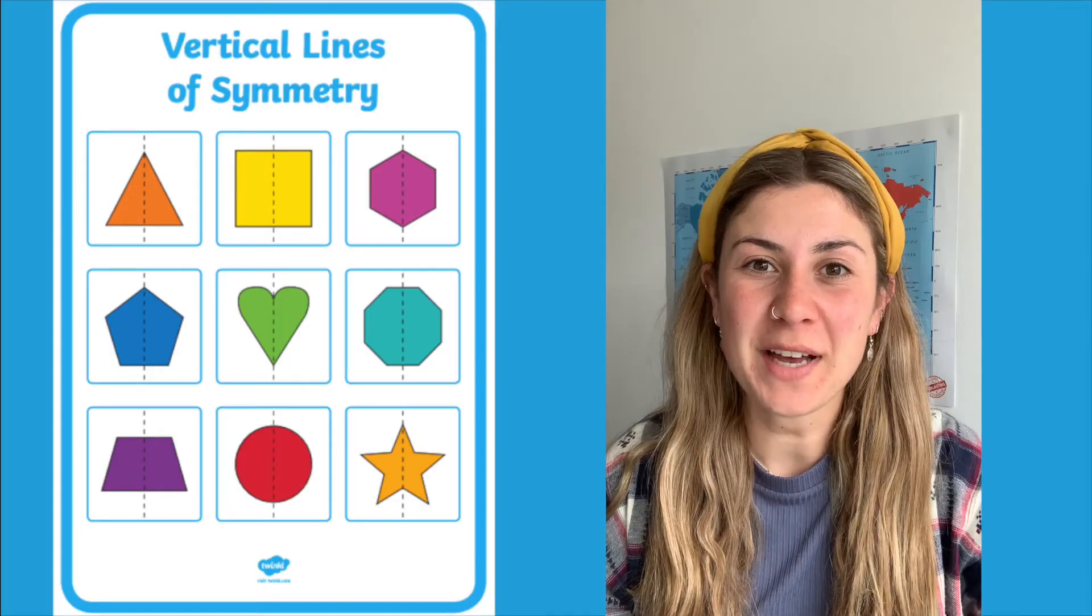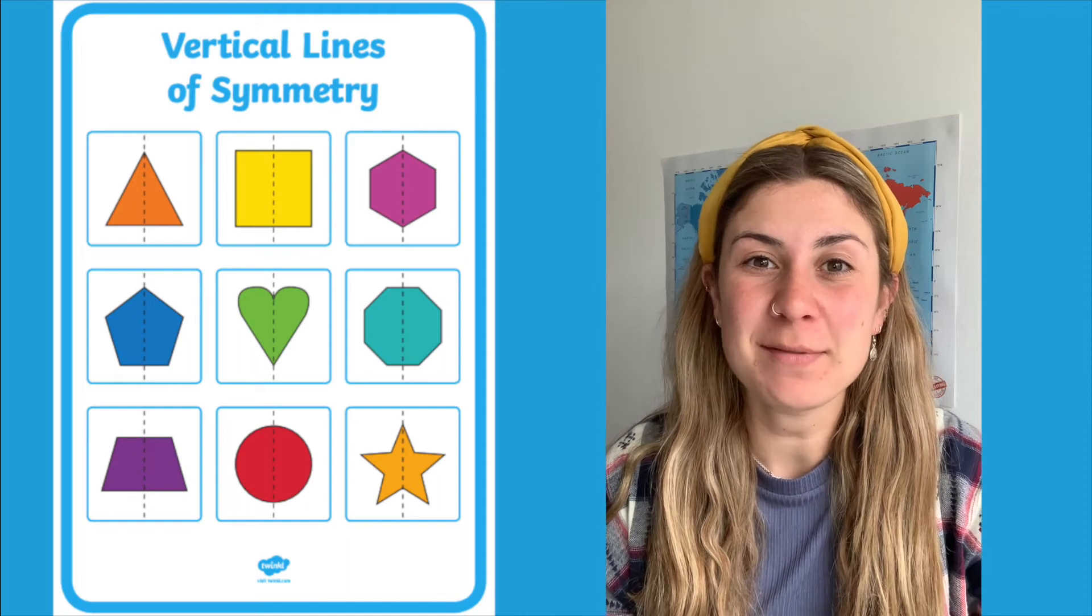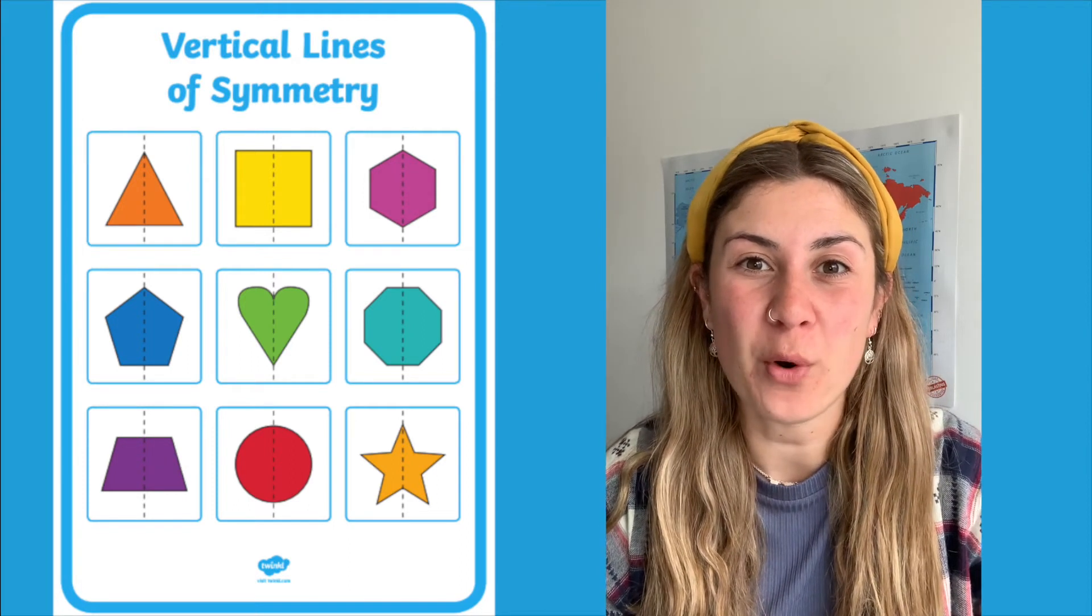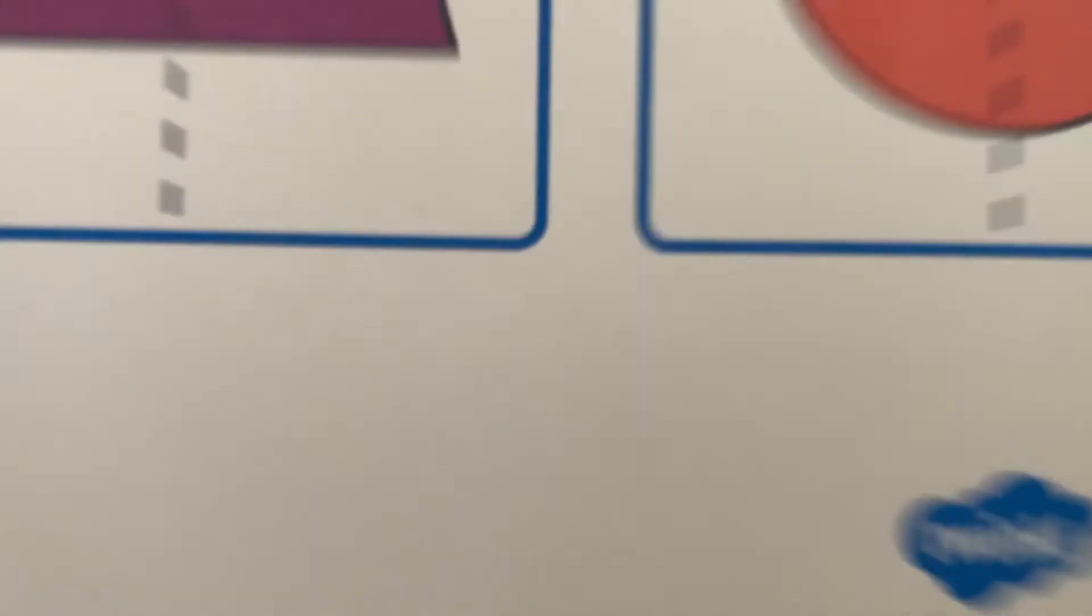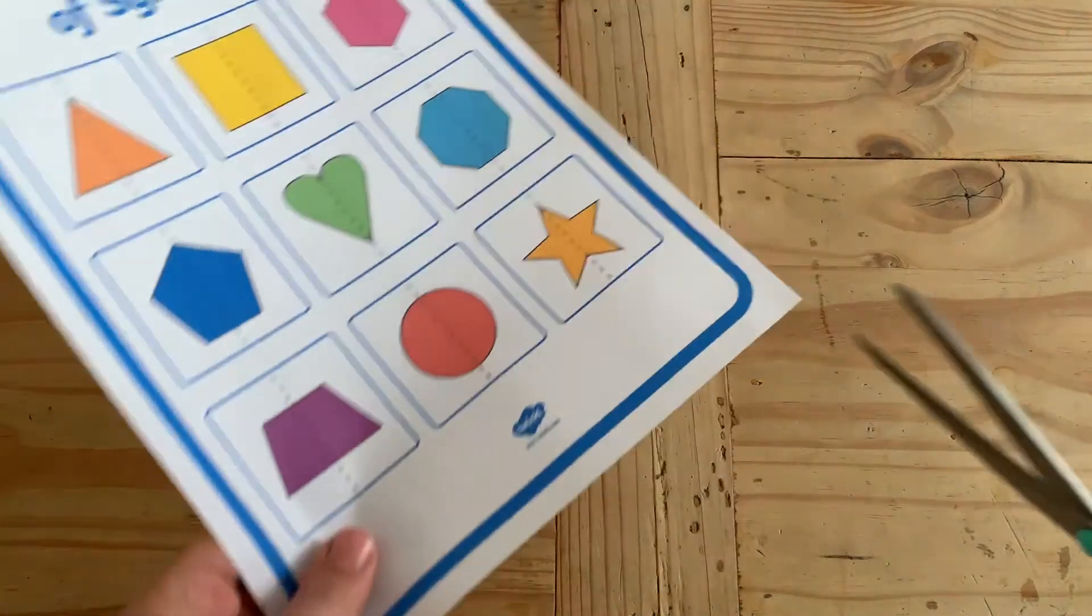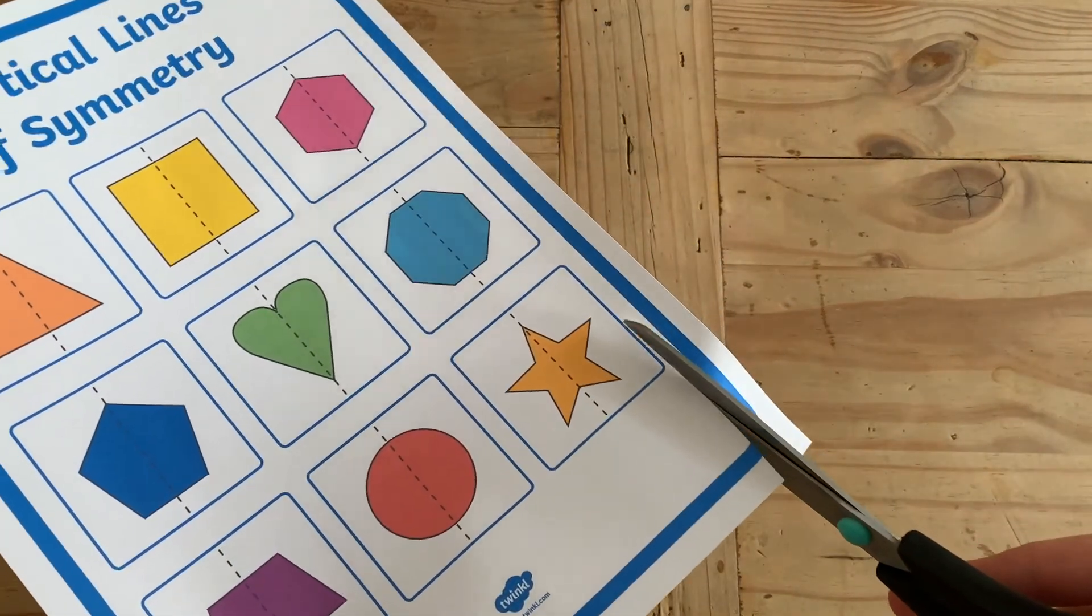On our website we also have this brilliant vertical lines of symmetry poster, but it can be used for more than just putting on the wall. You could begin by cutting each shape out and then cutting down their line of symmetry.